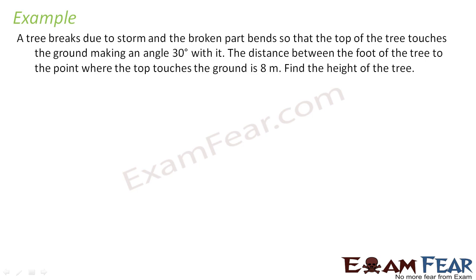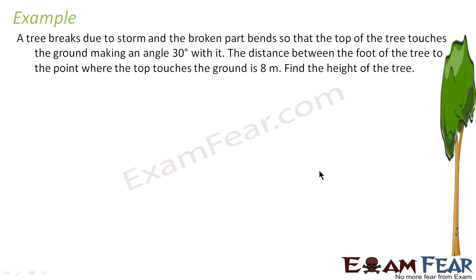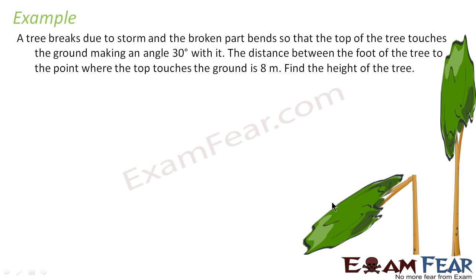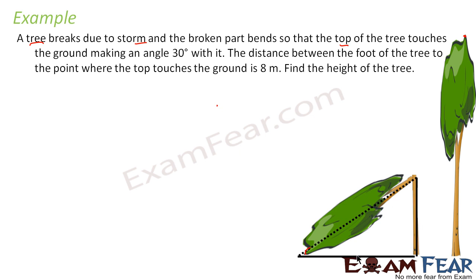Next example: a tree breaks due to a storm and the broken part bends so that the top of the tree touches the ground, making an angle of 30 degrees with it. The distance between the foot of the tree and the point where it touches the ground is 8 meters. We have to find the height of the tree. We draw a triangle on this with points A, B, and C, forming triangle ABC.